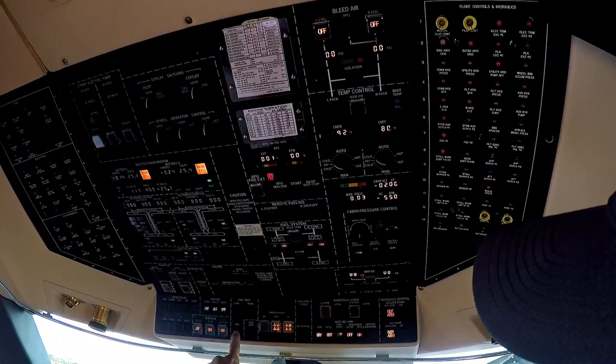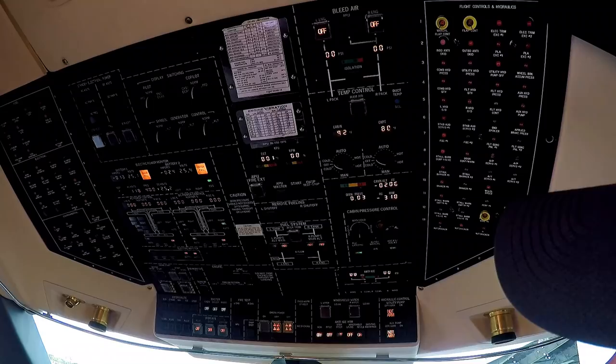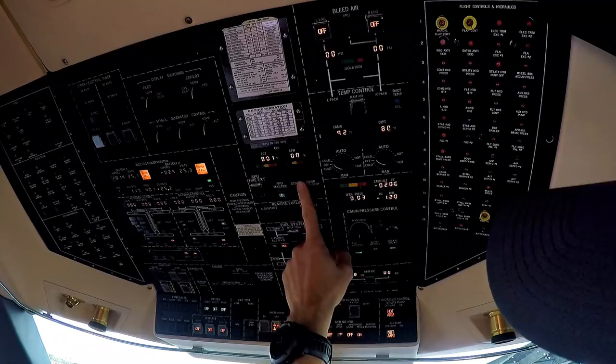Next thing we want to do is turn on the APU master. We're going to wait just a moment - we're going to get a red light right here that says low oil pressure. What that tells us is that the door on top of the airplane for the inlet of the APU is open.